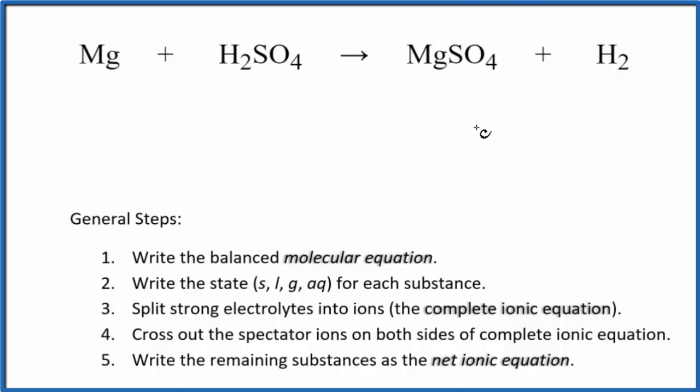To write the balanced net ionic equation, the first thing is we have to balance the molecular equation. This is the molecular equation. In this case it's already balanced. Next we need to write the state for each substance.